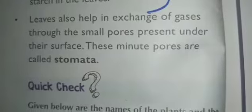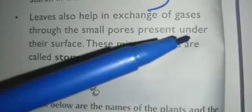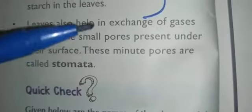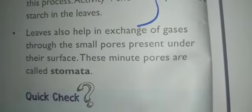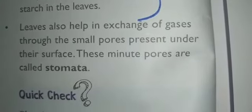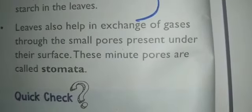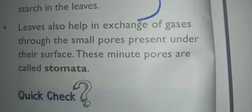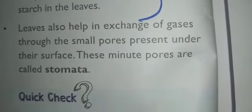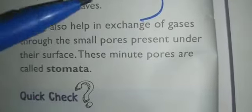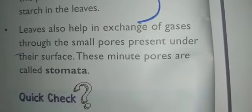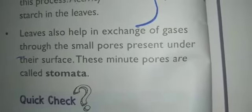Leaves also help in exchange of gases through small pores present on their surface. If you take a small portion of a leaf and observe it under a microscope, you can see small pores called stomata. Stomata help in exchange of gases in the leaves. These are some of the functions of leaves.